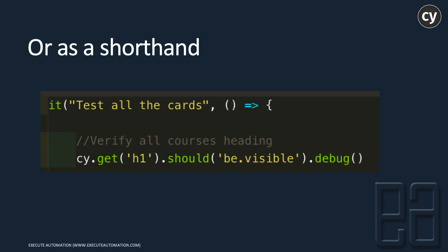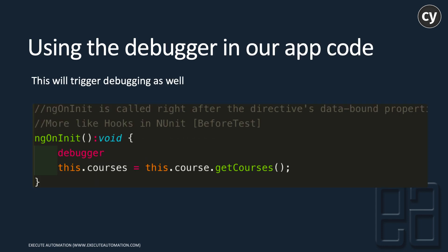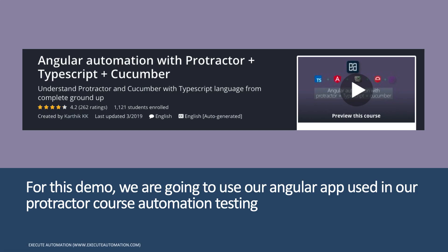The debugger is the raw JavaScript keyword used by developers to debug their applications. As a shorthand, you can also use the `.debug()` method to perform the same debug operation. You can also put the debugger line directly within your application code to see what is really happening. We are going to use a different application for this demo — the Angular application developed in the Protractor automation testing course.